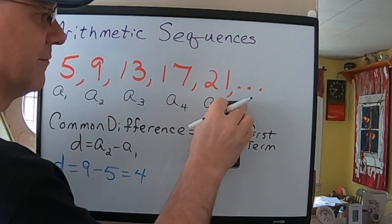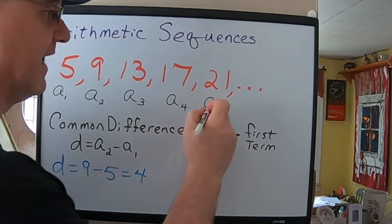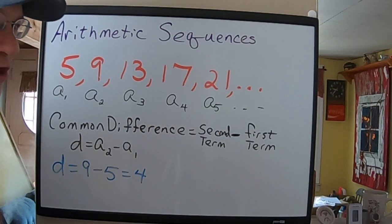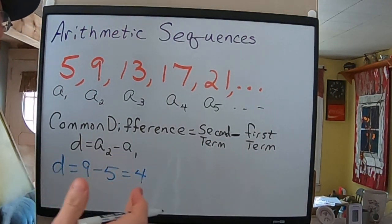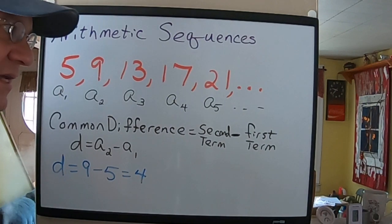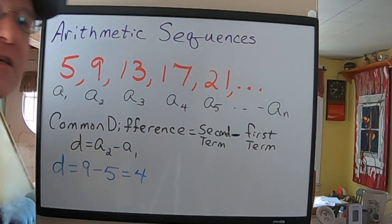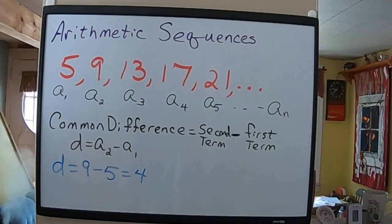So, A sub 5, and then, if you want any particular term, but you don't want to have to say which term you're talking about, you call that A sub n, because that's just some term, and you're going to fill in the value of n, like 1, 2, 3, later.